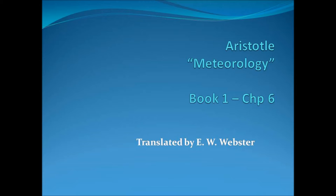An objection that tells equally against those who hold this theory and those who say that comets are a coalescence of the planets is, first, the fact that some of the fixed stars too get a tail. For this we must not only accept the authority of the Egyptians who assert it, but we have ourselves observed the fact. For a star in the thigh of the dog had a tail, though a faint one.